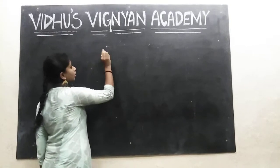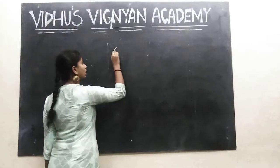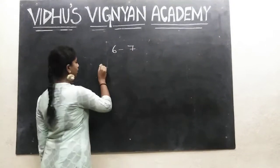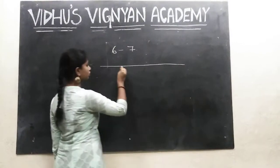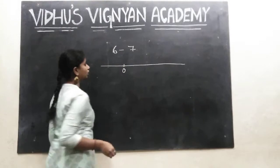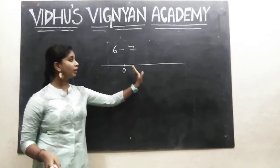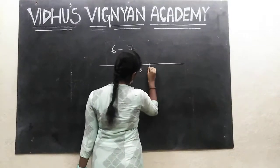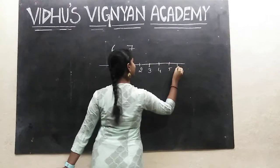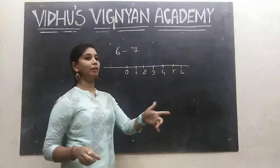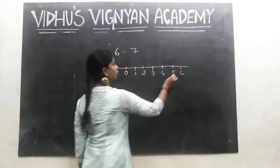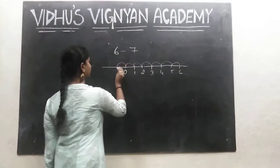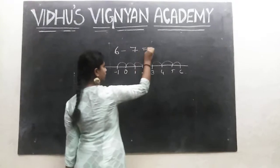I am taking two integers: 6 minus 7. First, take a number line and I am at the origin. Plus 6 denotes I am moving 6 steps towards the right. Now minus 7 indicates I am moving 7 steps in the left direction: 1, 2, 3, 4, 5, 6, 7. So I am at minus 1. The answer is minus 1.